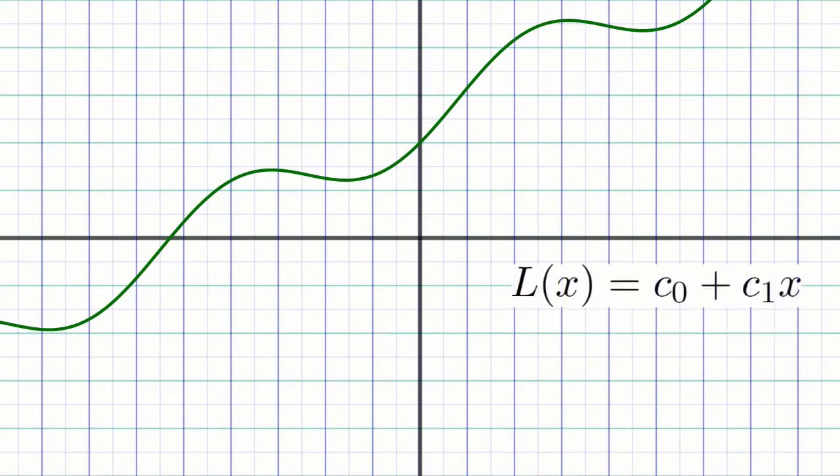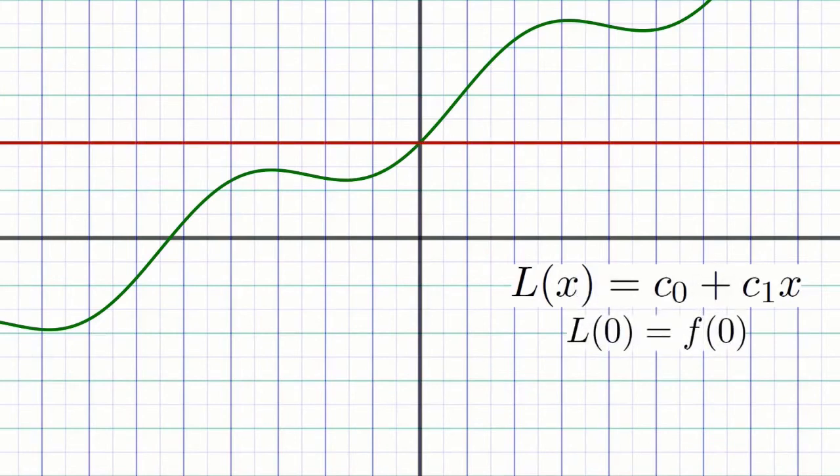Think again about how linear approximation, or tangent line approximation, works. Let's say we want to find the tangent line to this function at the point x equals 0. Every line is determined by two numbers, its y-intercept and its slope, which I will label as c0 and c1 in this case. The way we construct the tangent line is we make both the y-intercept and the slope agree with those of the target function at the point of tangency. That is, we want the value of the tangent line at x equals 0 to equal the value of the target function at x equals 0.